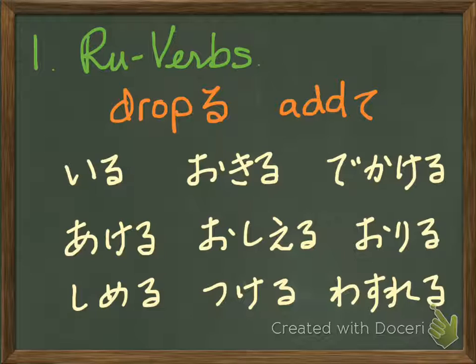There are three types of verbs. If you remember: ru-verb, u-verb, and irregular. Depending on verb types, the conjugation rules vary.